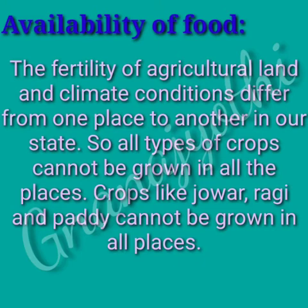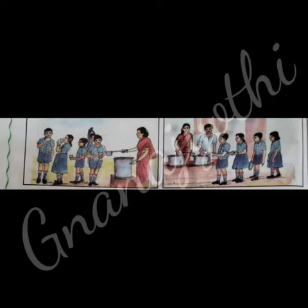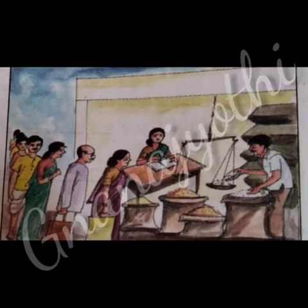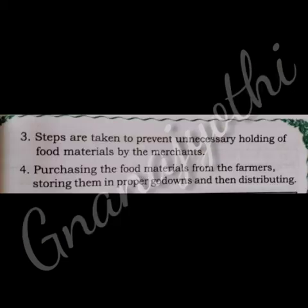Crops like jowar, ragi, and paddy cannot be grown in all places. Therefore, the government has taken steps to ensure availability of food for all the people. For example: giving milk and midday meals for students in schools; supplying food materials at nominal rates through fair price shops; taking steps to prevent unnecessary hoarding of food materials by merchants; purchasing food materials from farmers, storing them in proper godowns, and then distributing them.